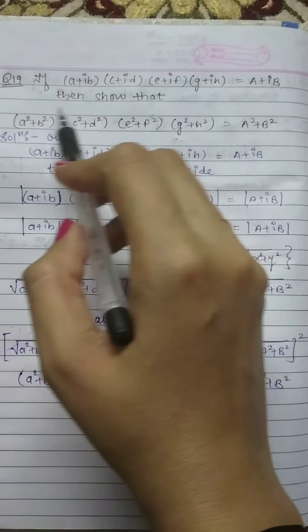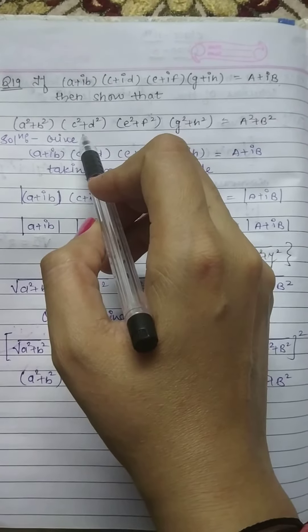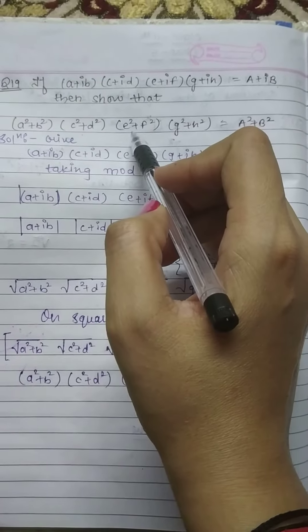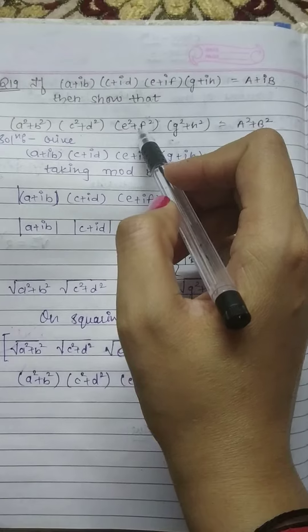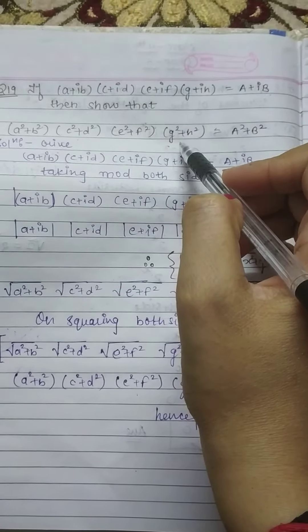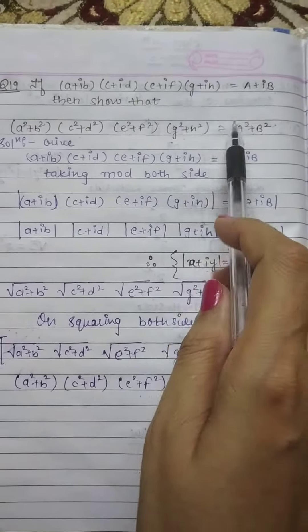(A²+B²)(C²+D²)(E²+F²)(G²+H²) equals A²+B². Now we have to prove this, given and proof.